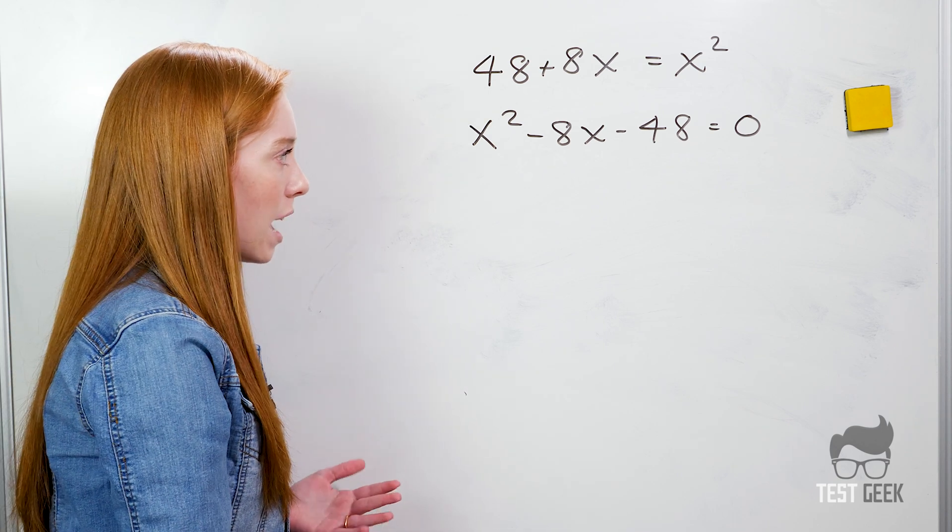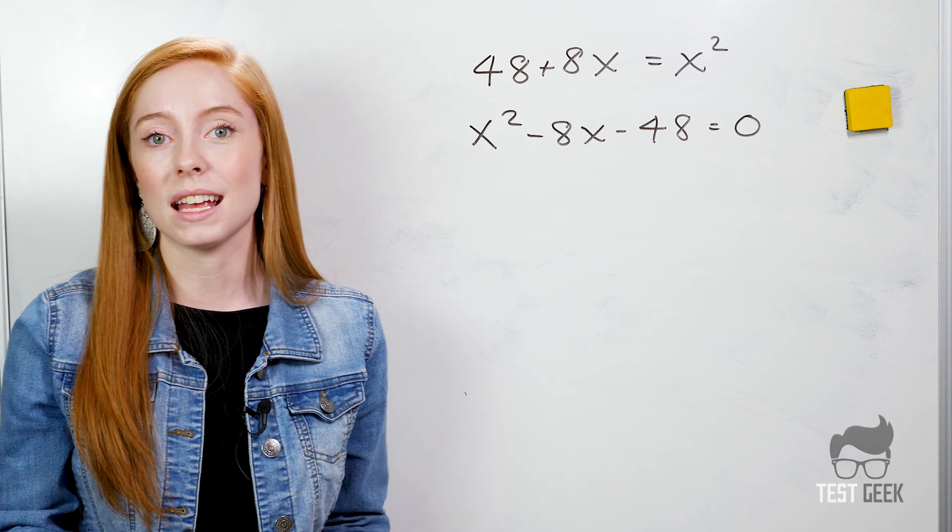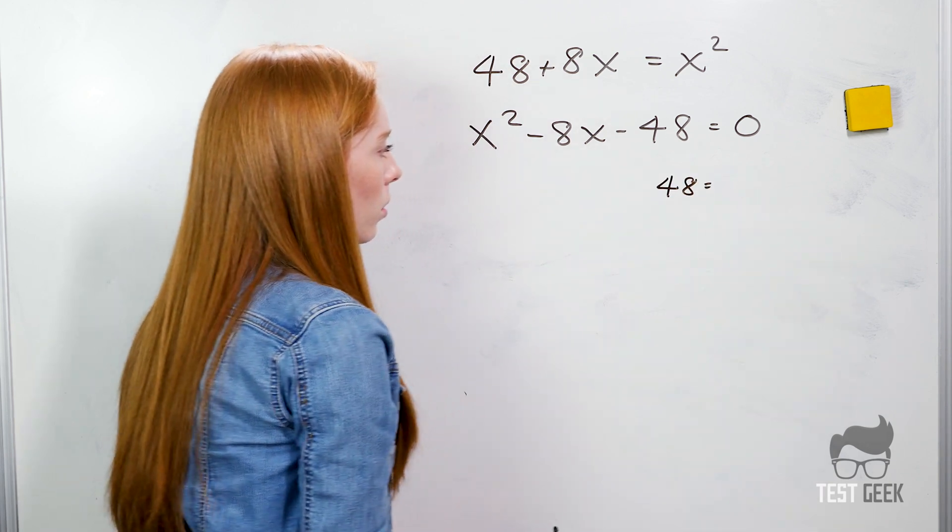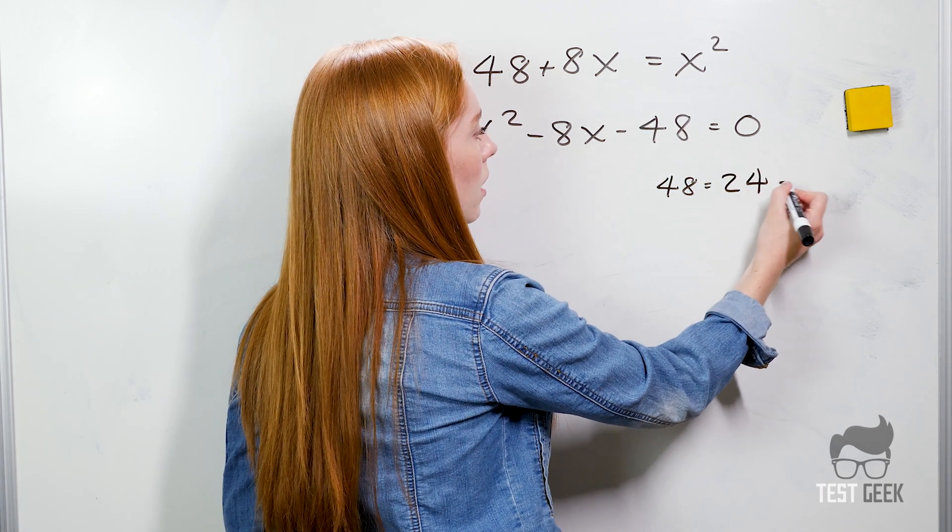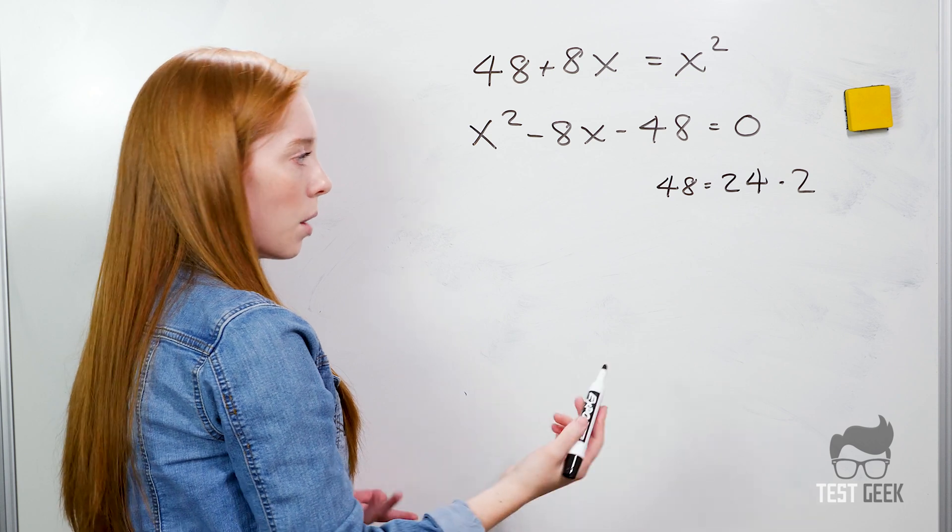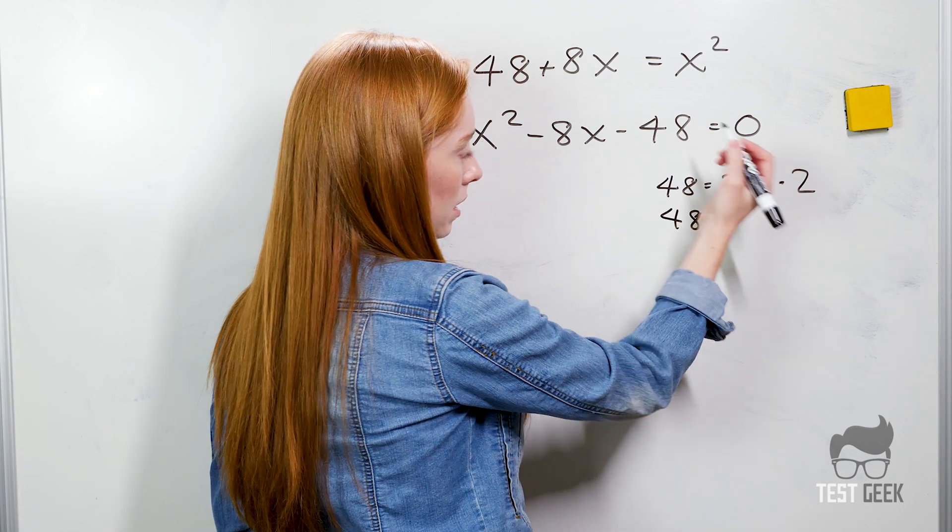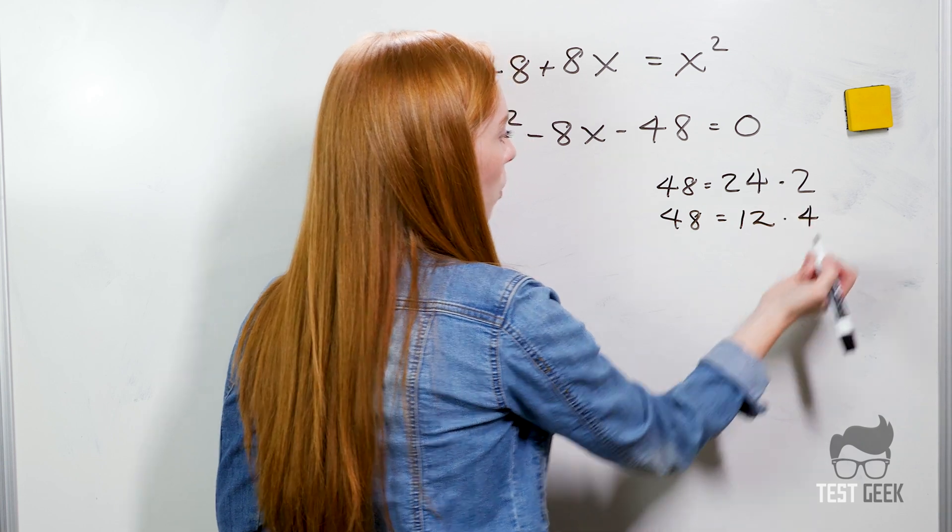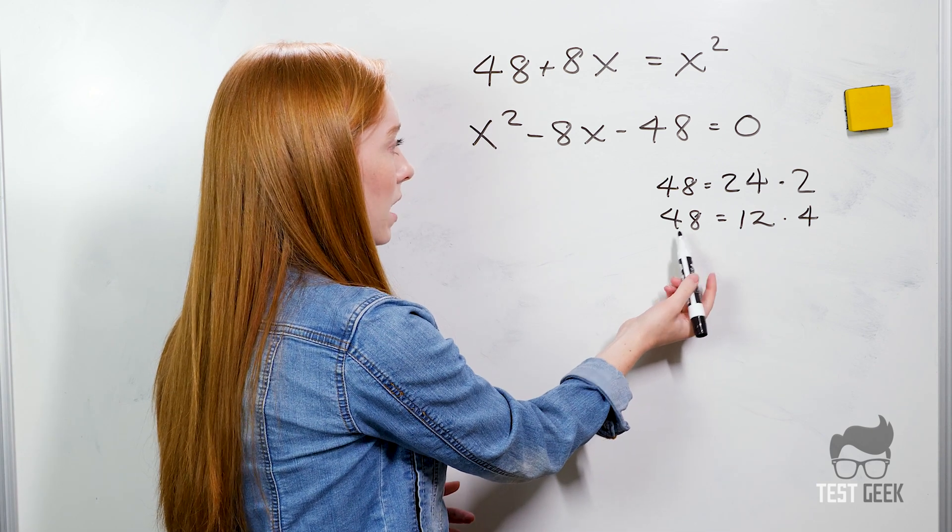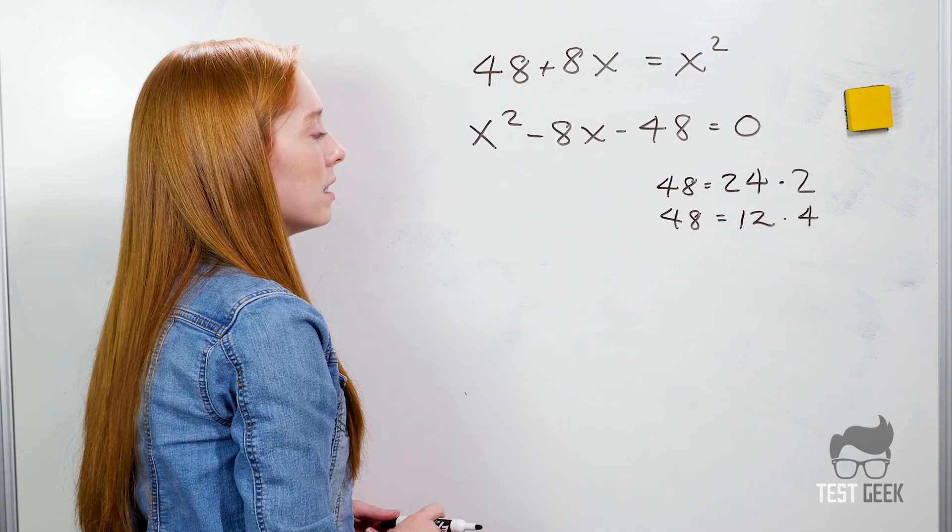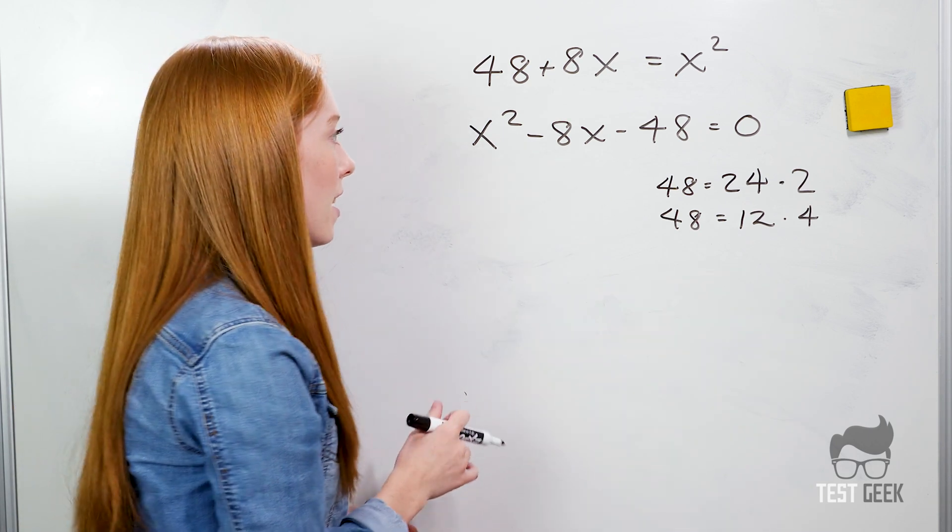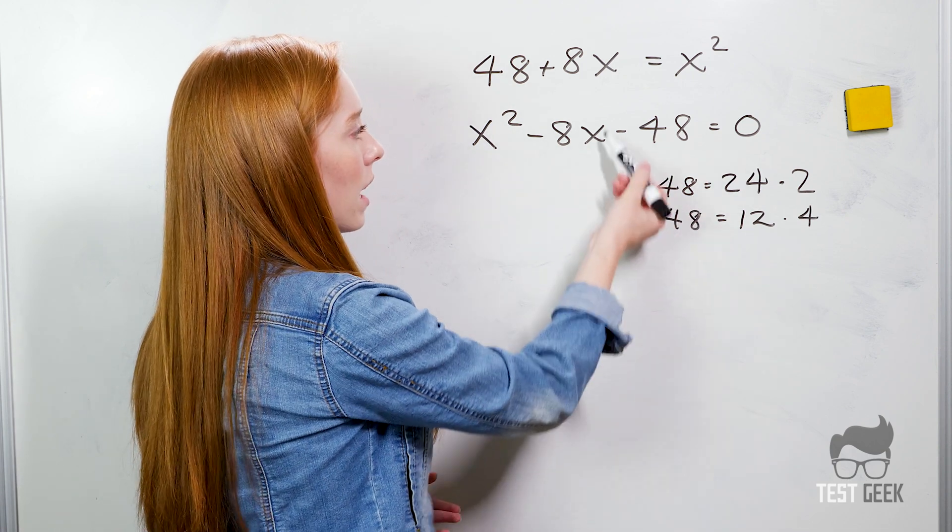But even if you're not quite sure off the top of your head what our numbers should be, we can still write down a few options and get there. So let's start by just taking 48 and saying 48 equals, well we could divide it by 2 and say 24 times 2. Well we can try that. Is there any way that we could get 8 from 24 and 2? No. So again we could say maybe let's divide it again and say 12 times 4. Well now we are looking a lot more promising. These two numbers multiply to give us 48 and we can find a way to make them equal negative 8.